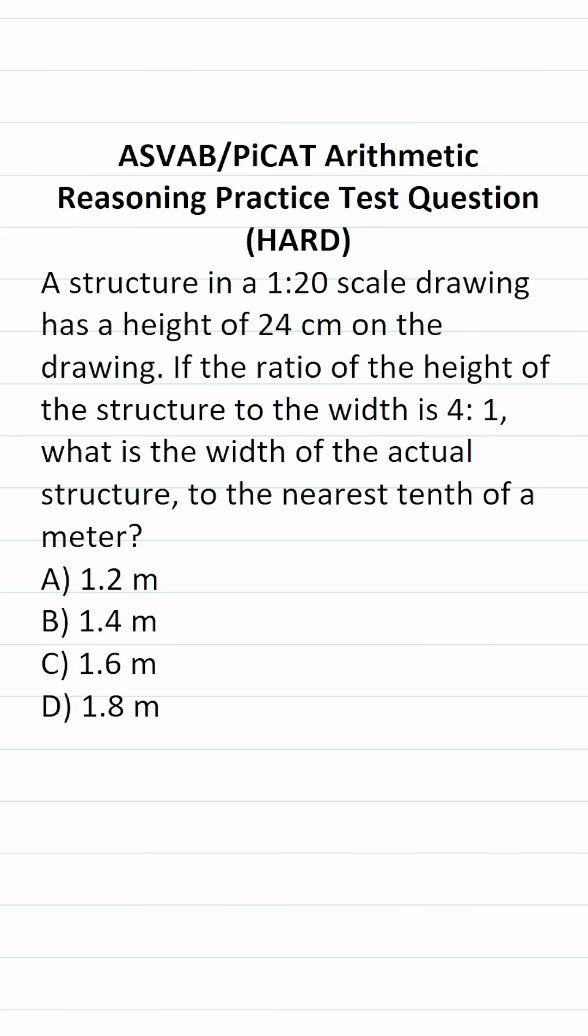All right, so let's start with this part right here. We know that the structure has a 1 to 20 ratio. That's the drawing versus the actual size of the structure. We know that on the drawing, the structure has a height of 24 centimeters, and we need to determine its actual height. So we're going to use a proportion to solve this one. That is 1 over 20 equals 24 over x, where x is the actual height of the structure.